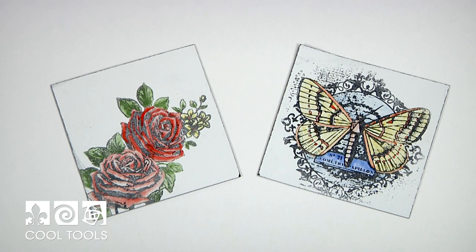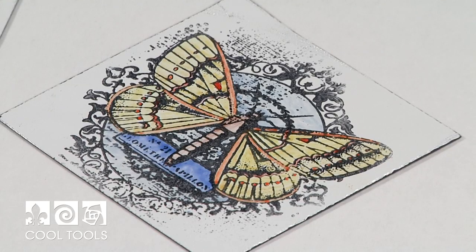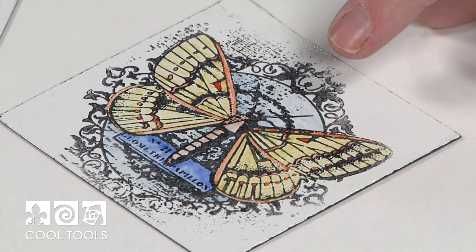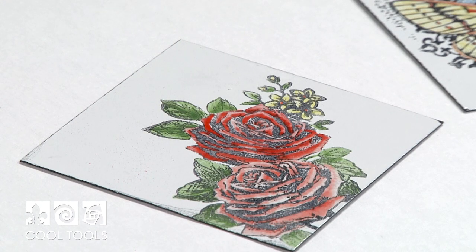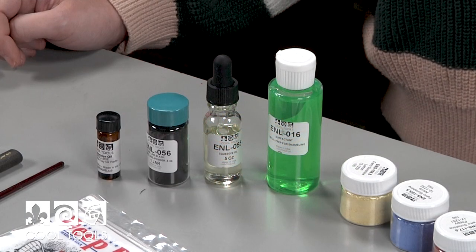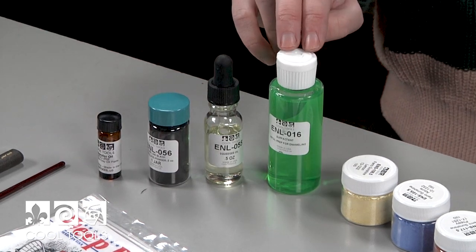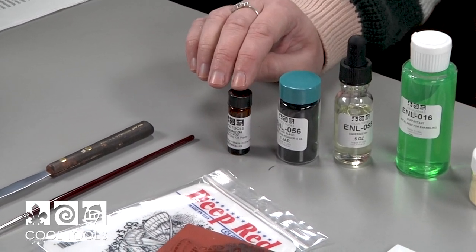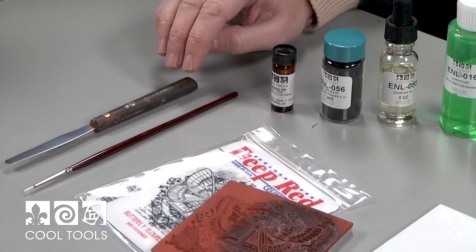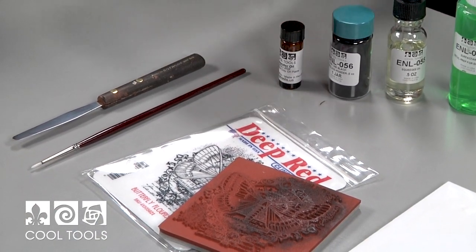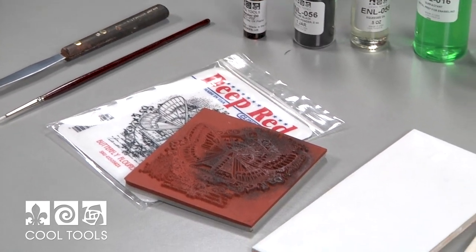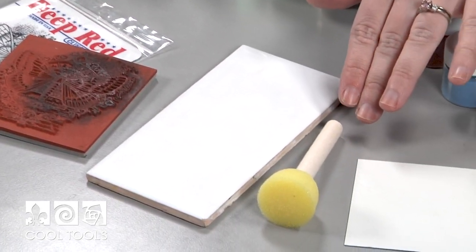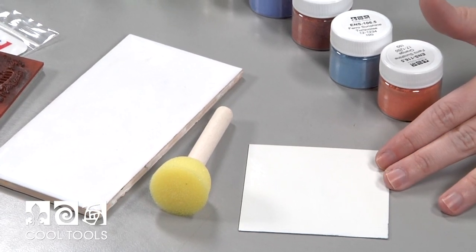These tiles are an example of what you can do with this technique. We're going to be using stamps to add black outlines to our pieces and then come back and paint into the outlines with sunshine enamels. For this technique you're going to need surfactant, squeegee oil, fine line black underglaze, lavender oil, a palette knife, a brush, a stamp, a tile, a sponge applicator, and an enameling square.